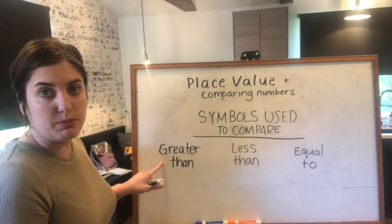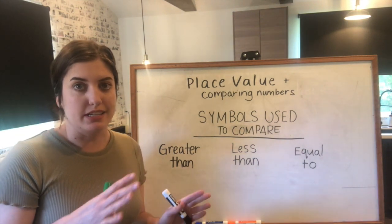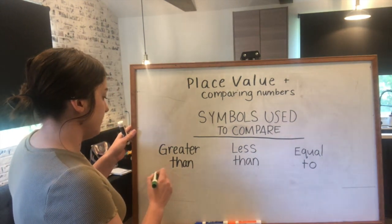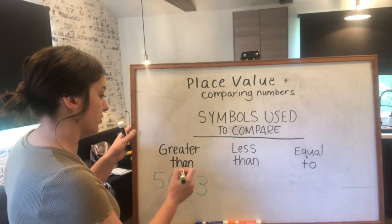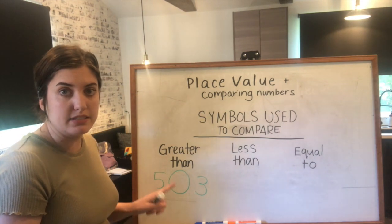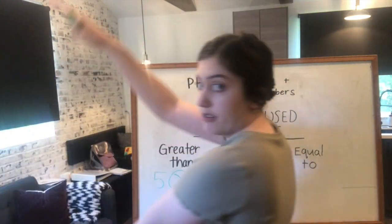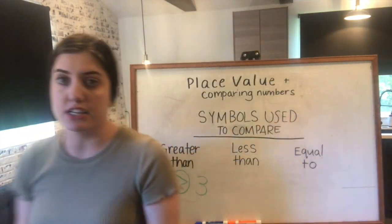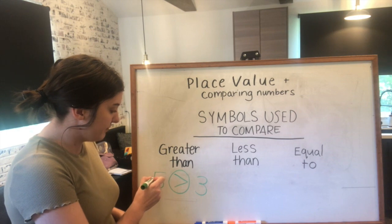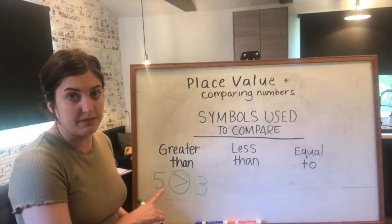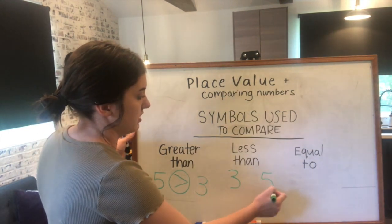Greater than is the first one we're going to go over. I'm going to pick just two numbers — let's do five and three. In your book you'll see a circle in between two numbers and it wants you to fill in the symbol. Greater than would be the alligator's mouth facing the five, because it's trying to eat the five since five is the greater or bigger number.